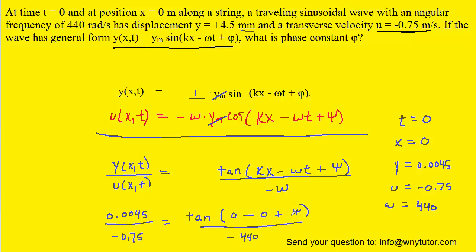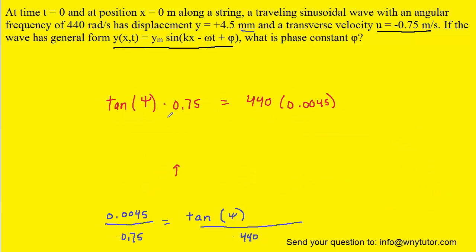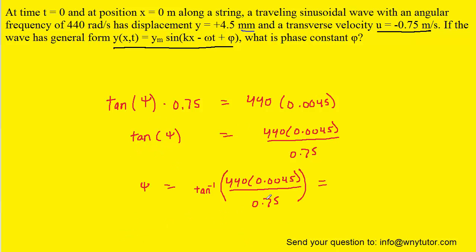Our goal is to solve for the phase constant phi. We can cancel the negative that appears on both sides, and the zero minus zero can be removed. We then cross multiply, divide both sides by 0.75, and finally take the inverse tangent of both sides. When we plug that into our calculators, we get a value of approximately 1.2 radians.